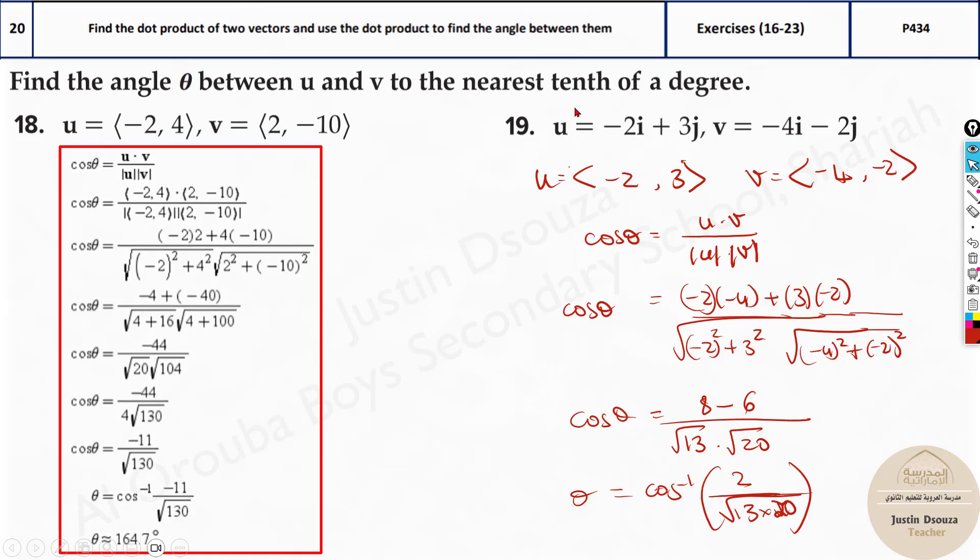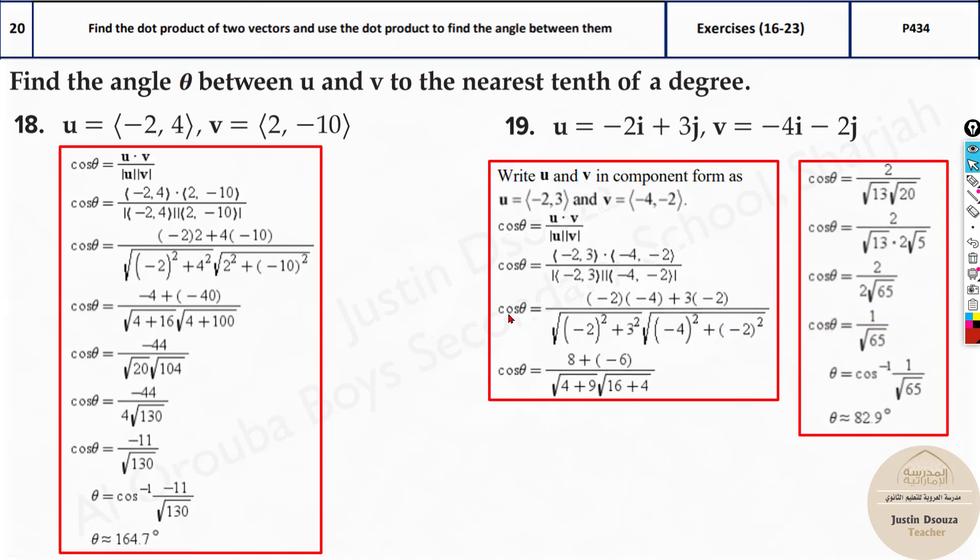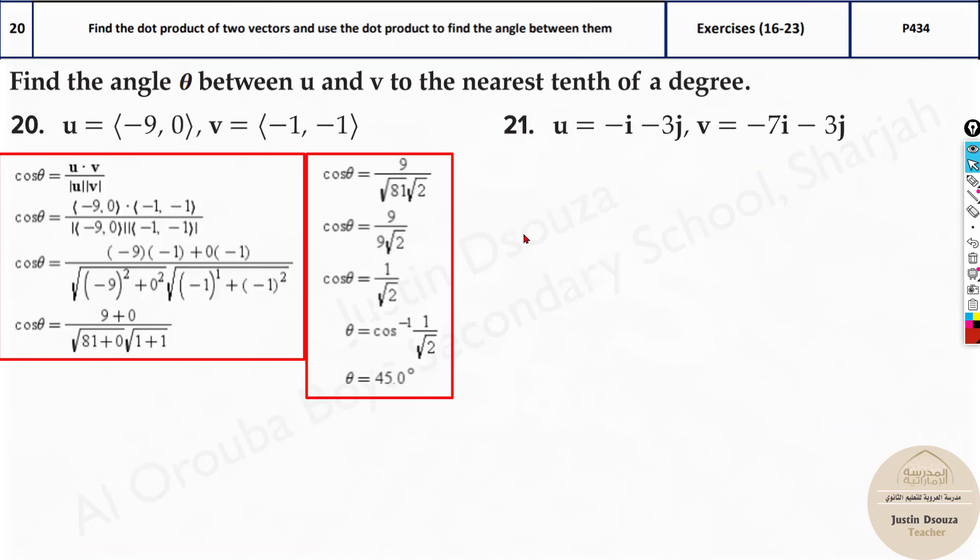Okay, over here, I've clearly mentioned nearest tenth. So please just take one decimal point. Yes, 82.9 degrees is the correct answer. All the worked out solution is available over here. Each step is mentioned.